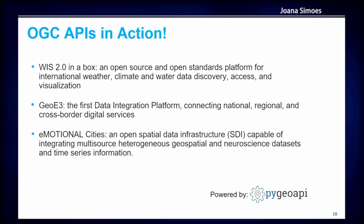There are also real use cases of deployments of OGC APIs. I mentioned three here, though there are many more. Two of them — WS-in-a-Box and Emotional Cities — were actually presented here at this OSGeo conference. All three are using PyGeoAPI at their core, which is a Python implementation of a suite of OGC API standards, implementing several of the standards shown in the previous slide.